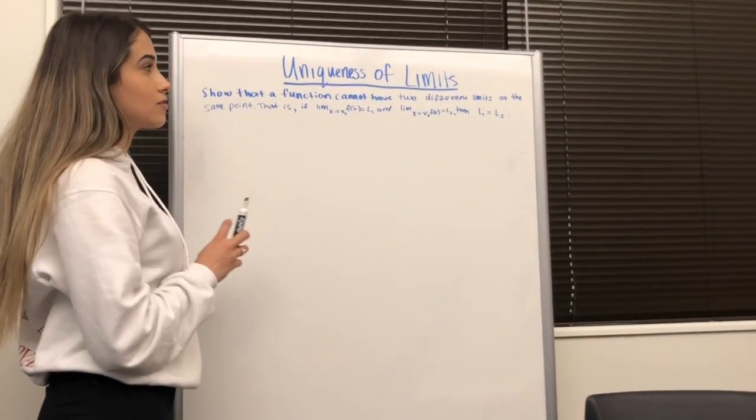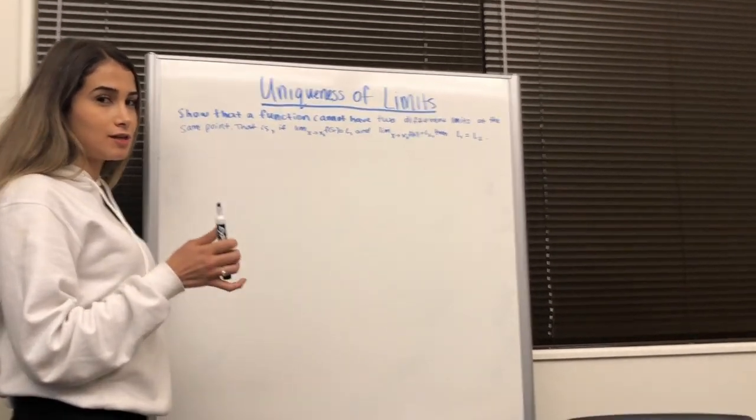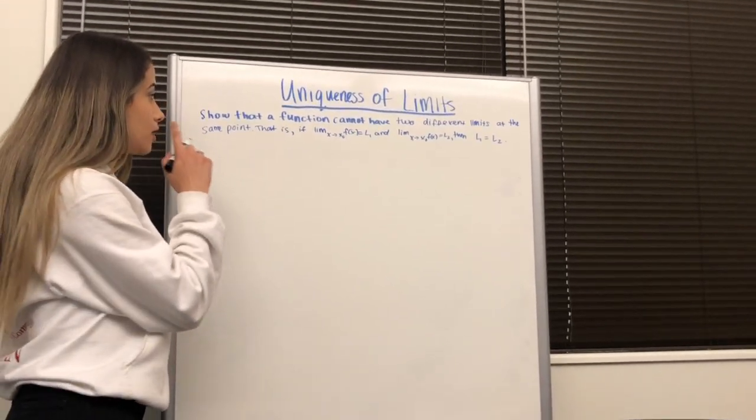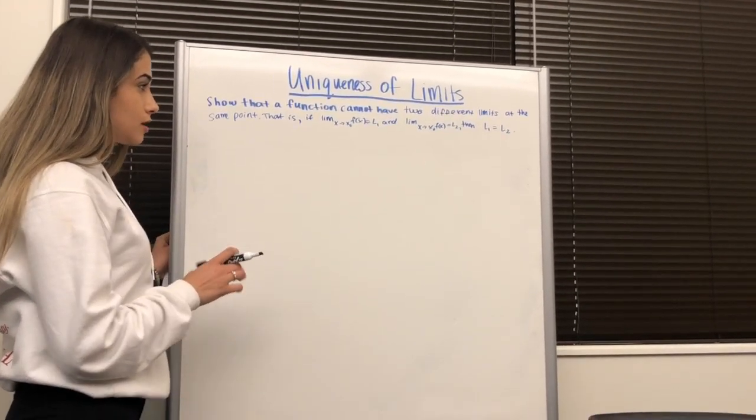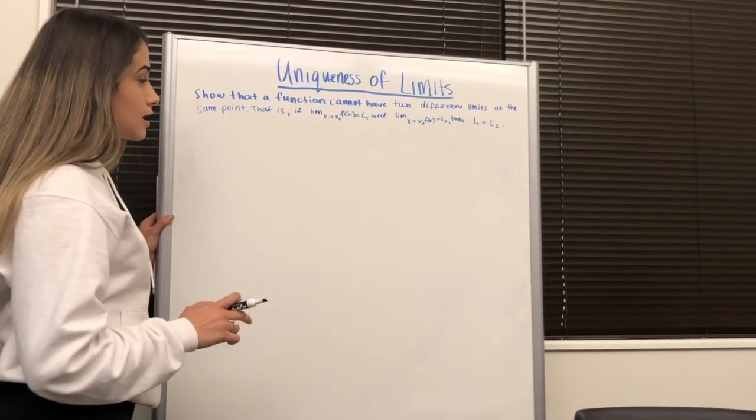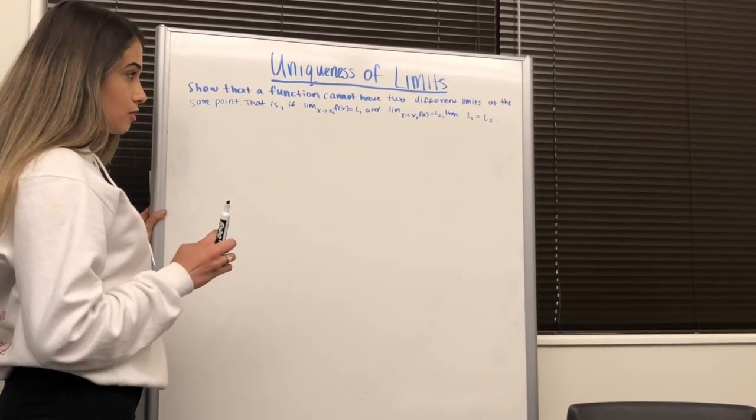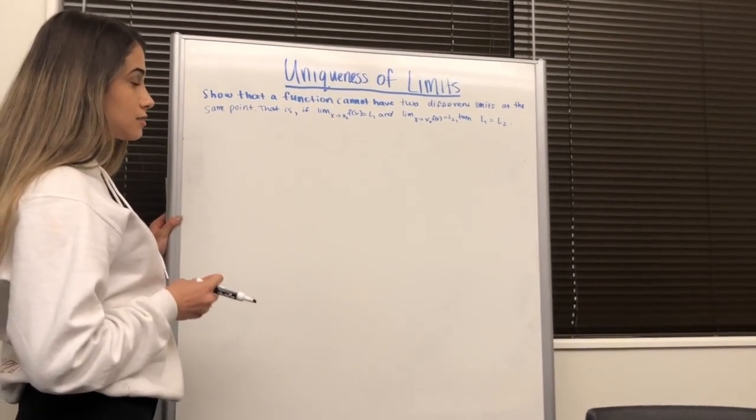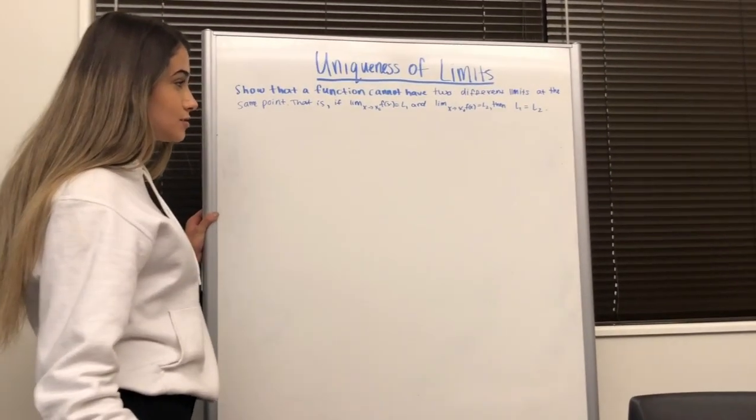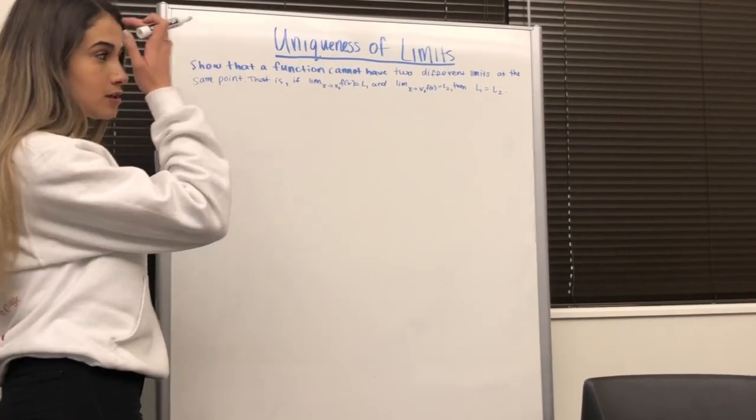Okay, so the theorem that we're proving is uniqueness of limits. We show that a function cannot have two different limits at the same point. That is, if limit as x approaches x sub-zero of f of x equals L1 and equals L2, then L1 equals L2.